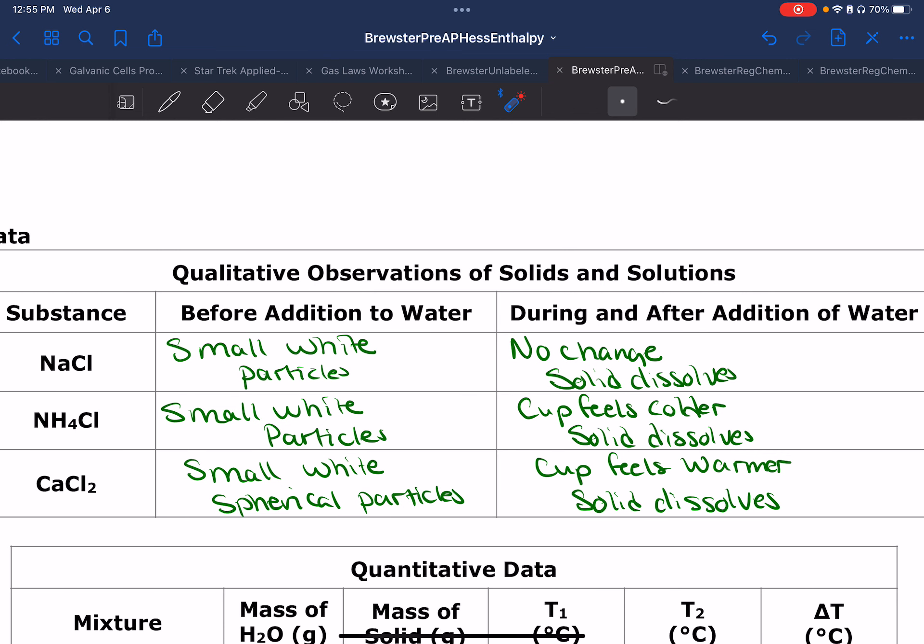Then observations, hopefully you have something along the lines what I have here, small white particles. Hopefully the calcium chloride you recognize that it had spherical particles instead. It had a lot of students on the first one, so there was no change to the sodium chloride. All three of them, this all dissolves.